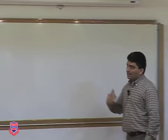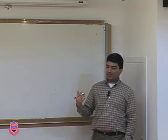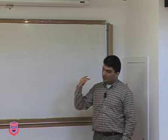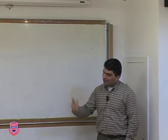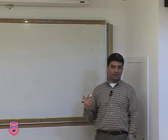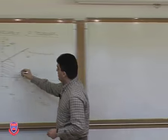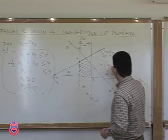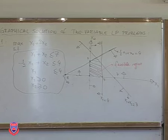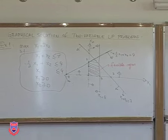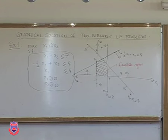Since we're interested in solutions that satisfy all of these constraints at the same time, we're taking the intersection of all these half-spaces. Each constraint divides the plane into 2 — good solutions and bad solutions in some sense. By taking the intersection of all good solutions, I obtain my feasible region. Anything that lies in that shaded region will be a feasible solution, and the feasible region is a collection of all feasible solutions.